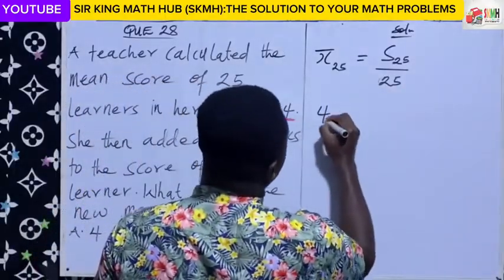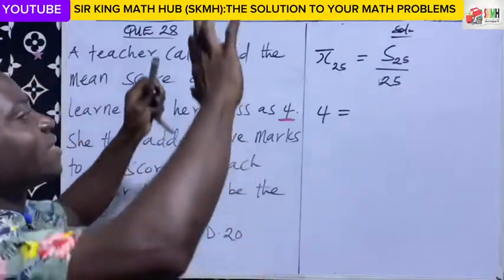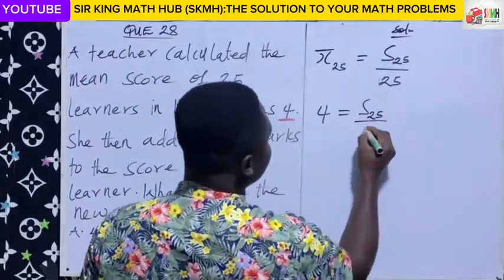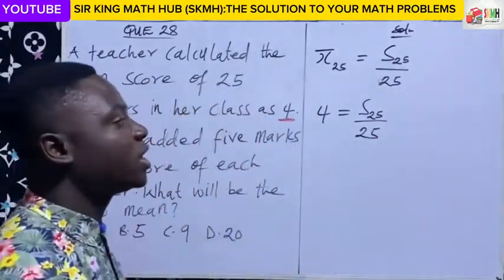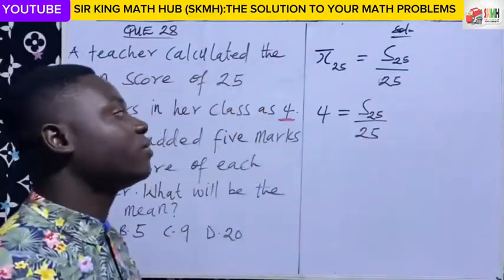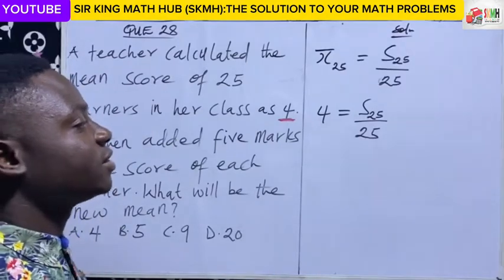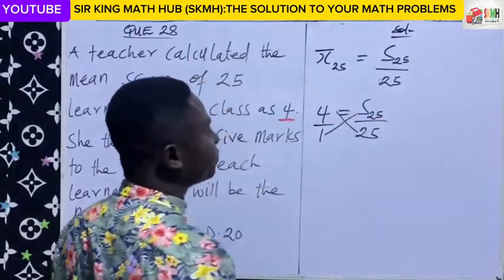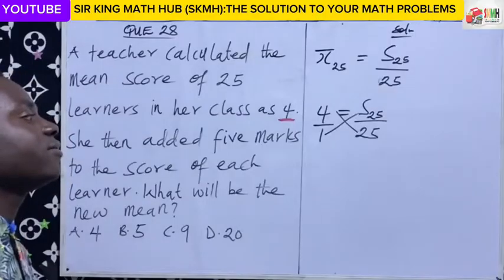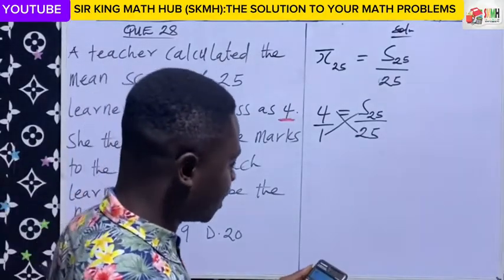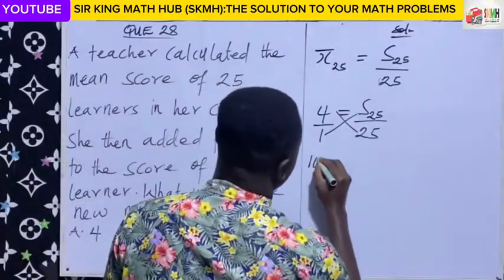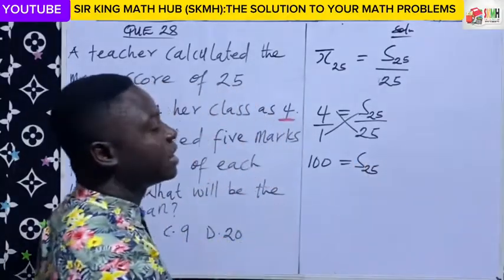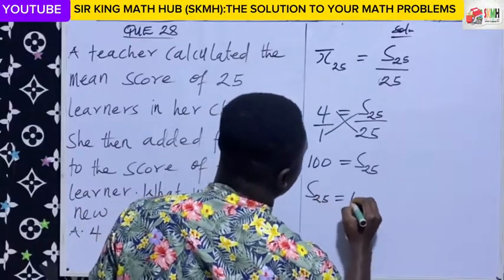So we can do the substitution. We don't know the sum of the scores of the twenty-five learners, but we know there are twenty-five learners. So let's calculate the sum of their scores. Four can be written as four over one, so we do the cross multiplication. Four times twenty-five equals one hundred. So the sum of the twenty-five learners' scores is equal to one hundred.